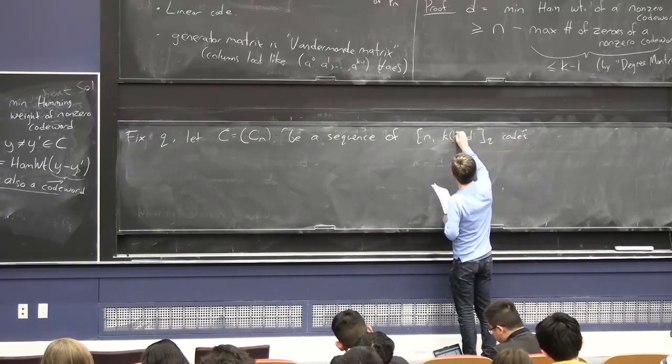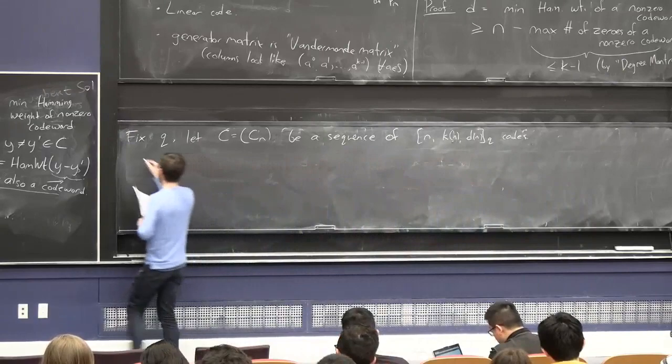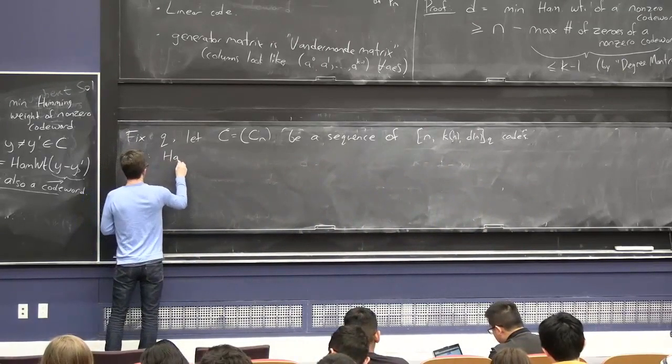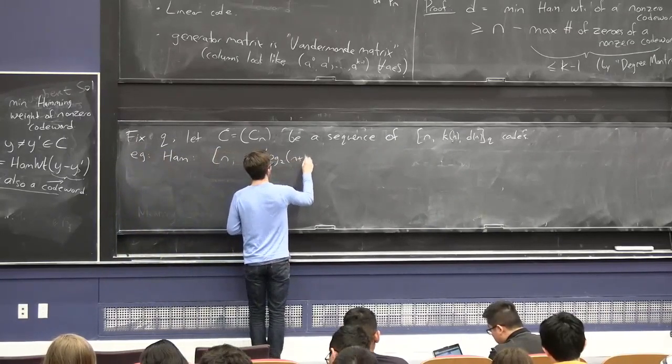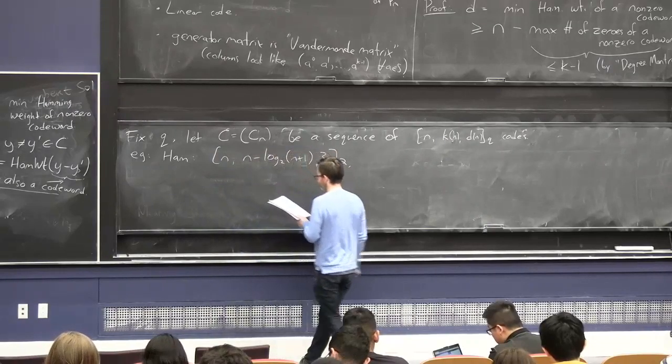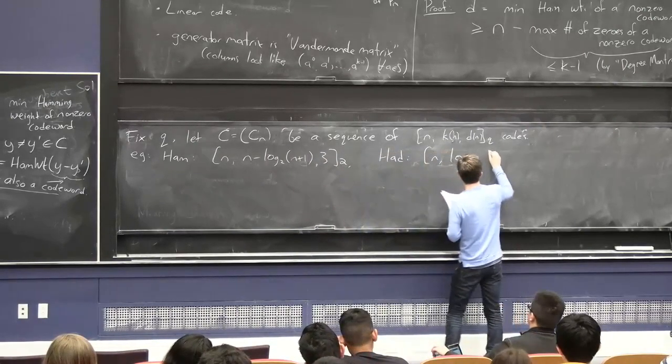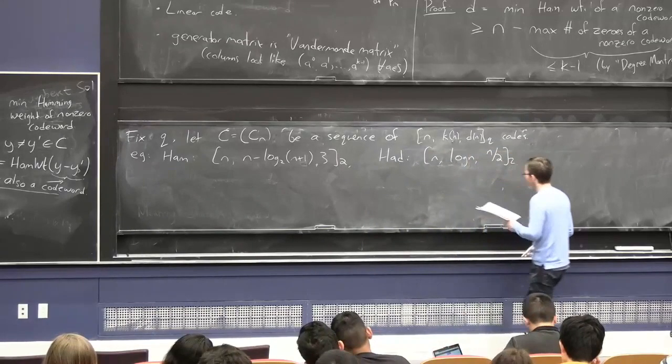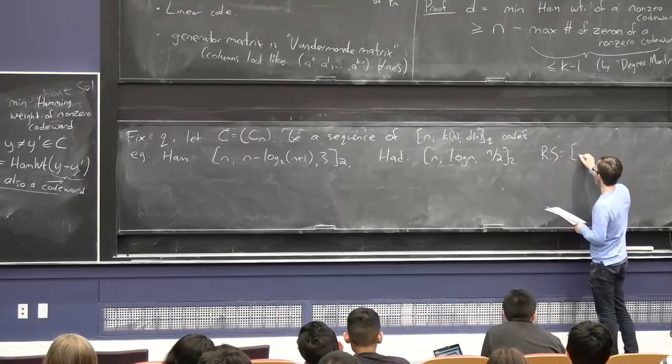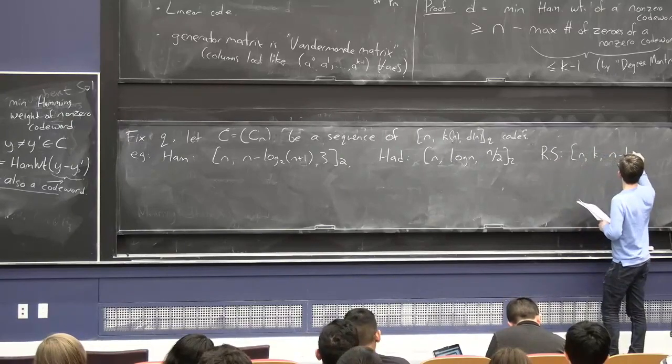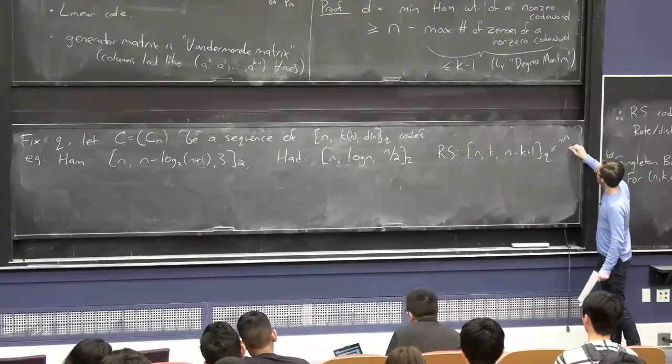And I can think about letting k depend on n and d depend on n. OK, so for example, with the Hamming code, it was n, n minus log base 2 n plus 1, 3, size 2. And for the Hadamard code, it was n, log n, n over 2, size 2. And for the Reed-Solomon code, it doesn't really fit into this picture, because q is not fixed, but I'll write this anyways. It's n, k, n minus k plus 1, q. But this is not fixed, because this has to be at least n, so it doesn't really count.